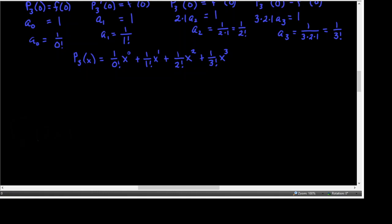I'm going to graph this polynomial. Let me write the simplified version: 1 over 0 factorial times X to the 0 is 1, plus X, plus one half X squared, plus one sixth X cubed. So I've typed in 1 plus X plus X squared over 2 plus X cubed over 6, and then I'm going to graph that.